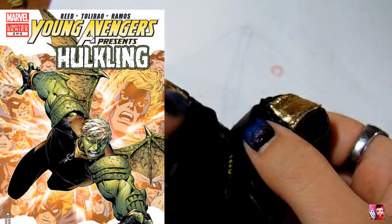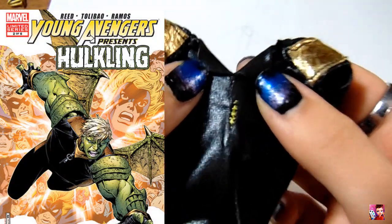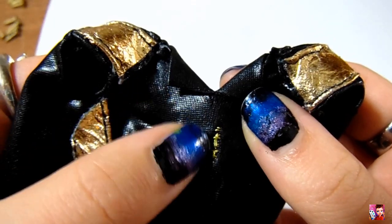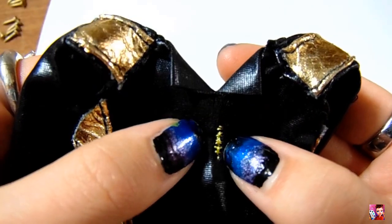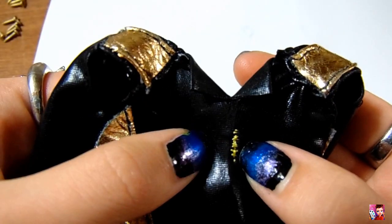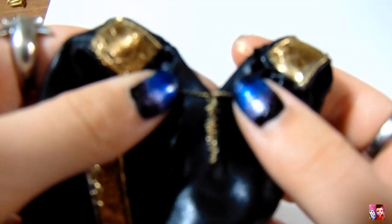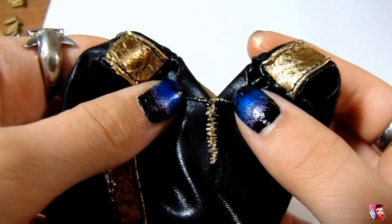Hulkling's costume has a collar, so I added that. And I tried to embroider a zipper, but the thread I used was the wrong color and it looked a little stupid. So I added that with gold fabric paint instead.